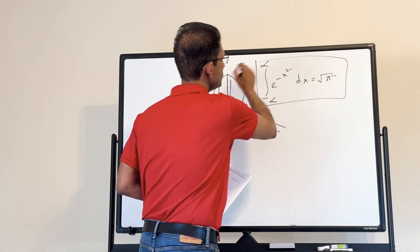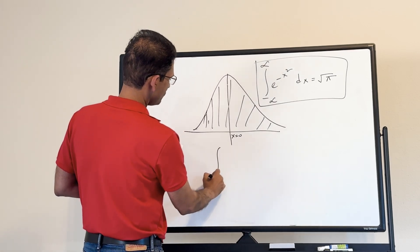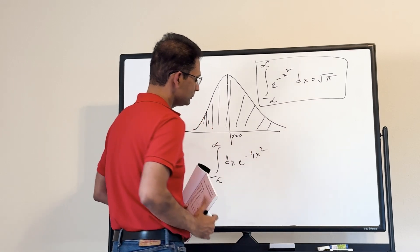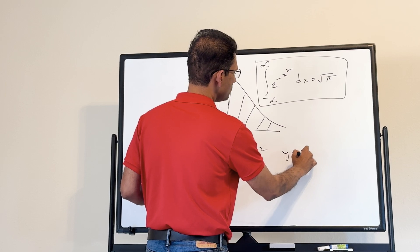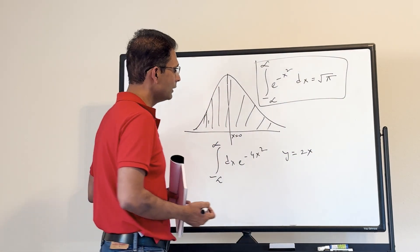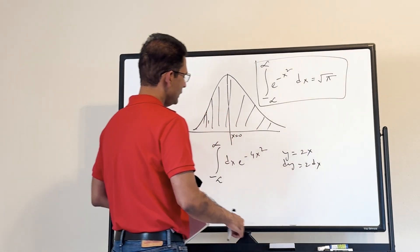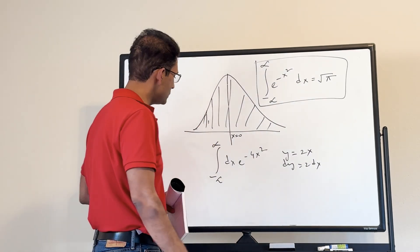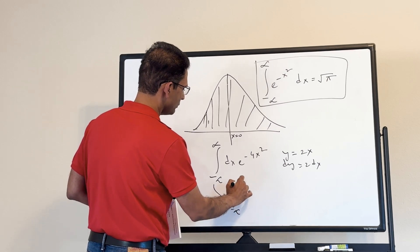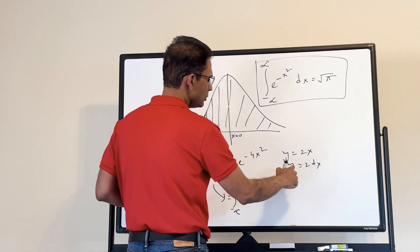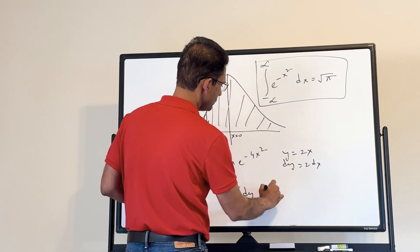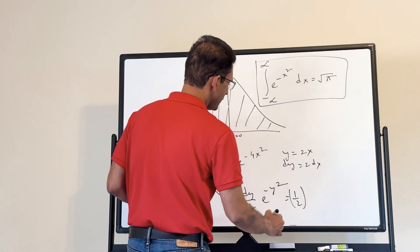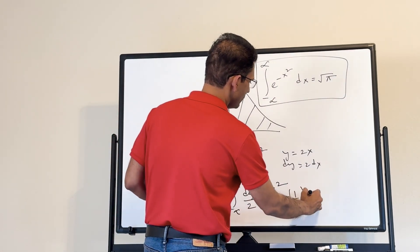Let's use this result to do a problem: the integral from minus infinity to plus infinity of e to the minus 4x squared dx. We make the substitution y equals 2x, so dy equals 2 dx. The limits don't change. The integral becomes the integral of e to the minus y squared times dy over 2, which gives us one half times square root of pi.